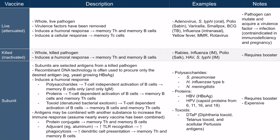Some examples of killed vaccines include the rabies vaccine, the influenza vaccine specifically the intramuscular injected form, the polio vaccine specifically the Salk form, the hepatitis A vaccine, and Salmonella typhi the intramuscular form — the typhoid vaccine.